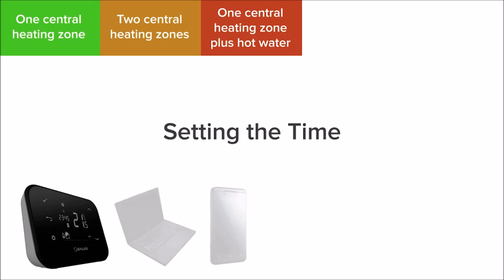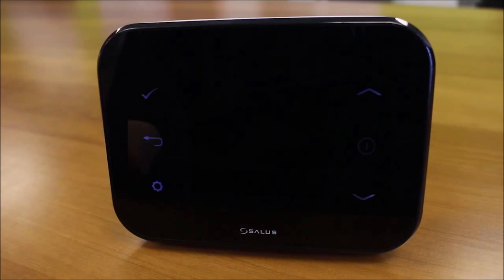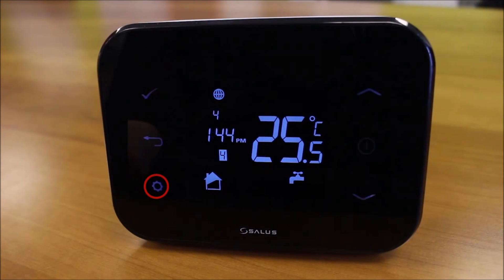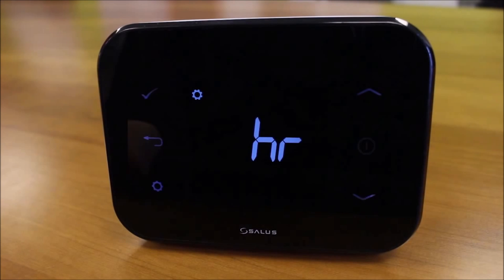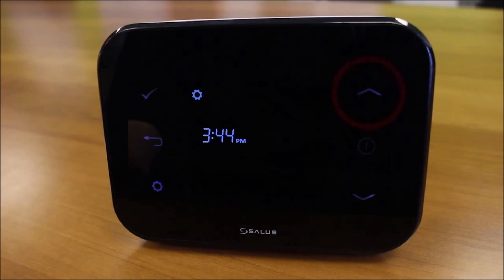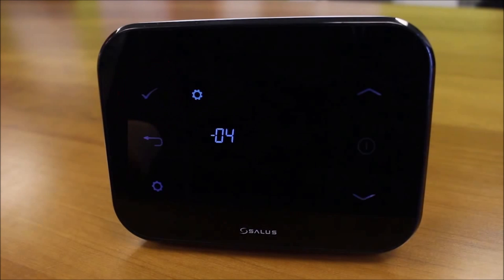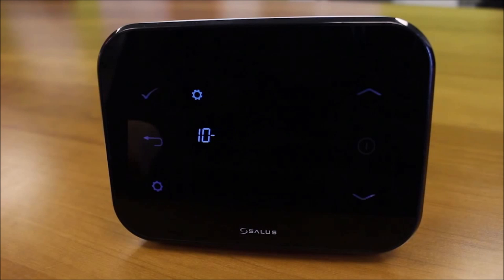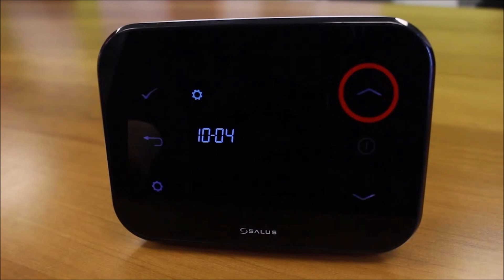Setting the Time. Press the Power button. Use the arrows to change the minutes and press Tick to confirm. Use the arrows to change the day and press Tick to confirm. Use the arrows to change the month and press Tick to confirm. Use the arrows to change the year and press Tick to confirm.